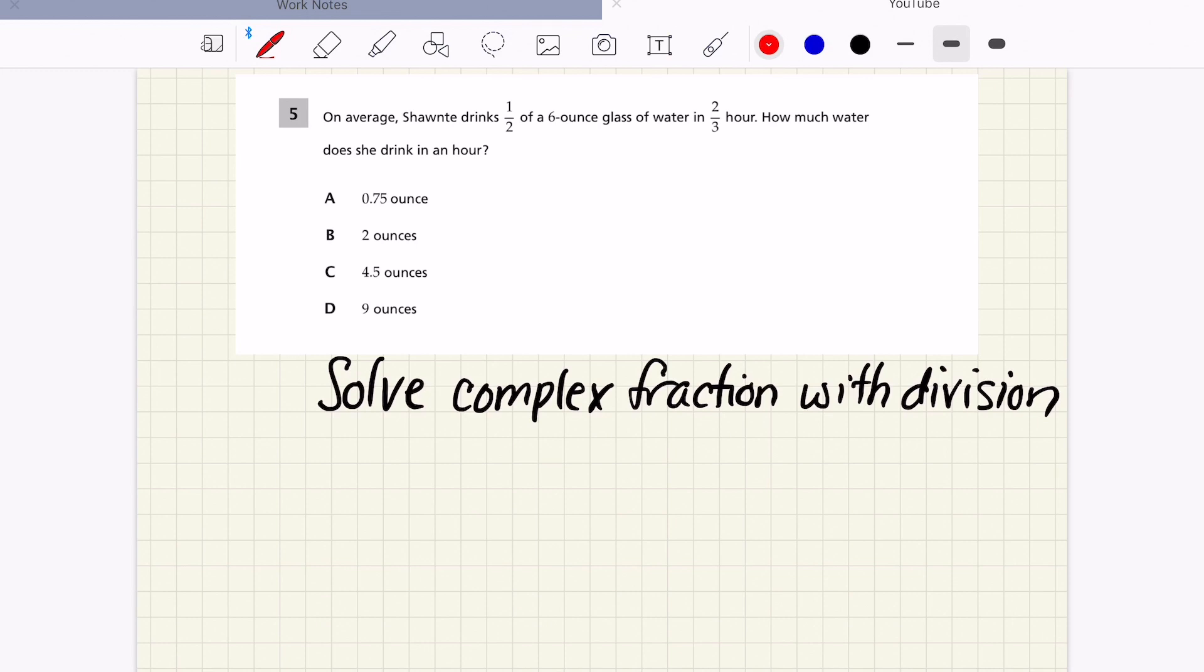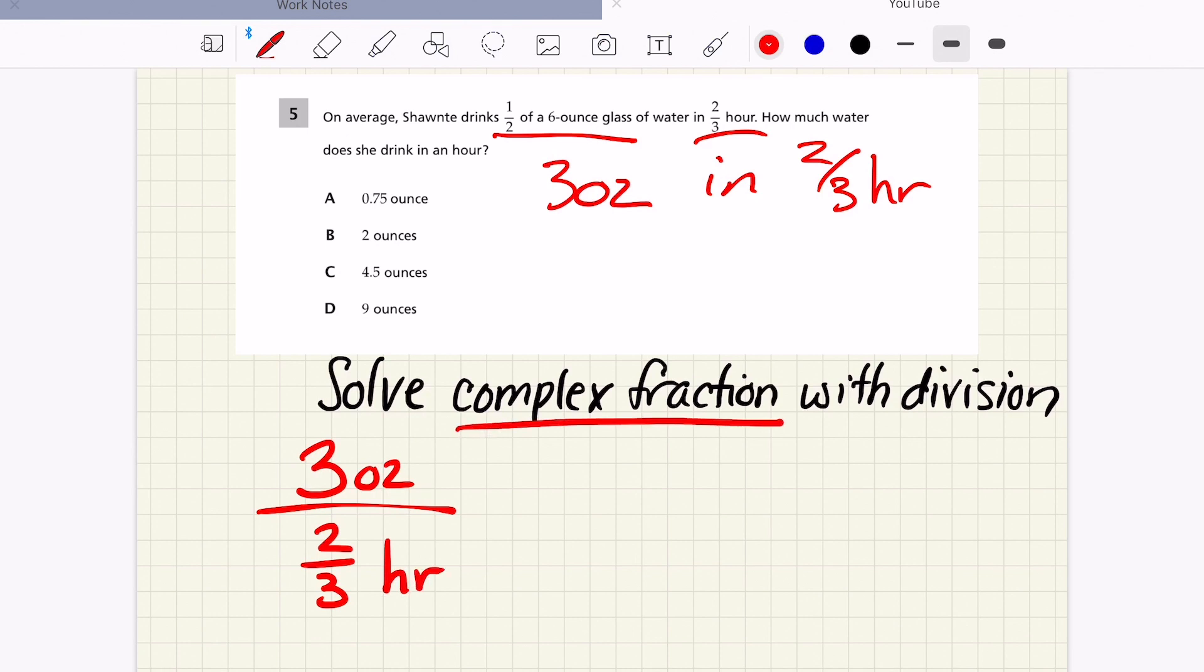Okay, so let's look at it just with division. So again, we know this is true. Three ounces in two thirds of an hour. So I'm going to represent that three ounces in two thirds of an hour. And I call this a complex fraction, because I have two different units happening here. And even though it's a fraction, anytime I see this fraction bar, I'm actually thinking of division, because I just have my numerator and I have my denominator and a fraction bar. And that's just a division problem.